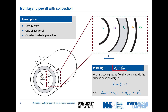In this pipe wall, we have already discussed that due to the changing — specifically increasing — area, we do not have a constant area-specific heat flux. Although the heat flux entering the pipe at the inner area is exactly the same as the heat flux exiting the pipe on the outside.